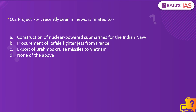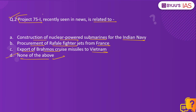Now let's look at the second question. Project 75I, recently seen in the news, is related to — construction of nuclear-powered submarines for the Indian Navy, procurement of Rafale fighter jets from France, export of BrahMos cruise missiles to Vietnam, or none of the above. The correct answer is option D, none of the above.